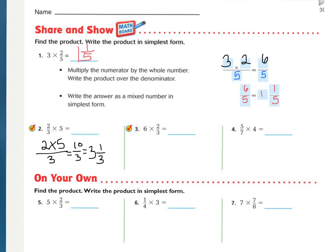We look at number 3. Again, whole number 6 times the numerator, 2, over the denominator of 3. Multiply that out. That's 12 over 3. How many 3s are in 12? 4, so your answer is just 4 in that case.